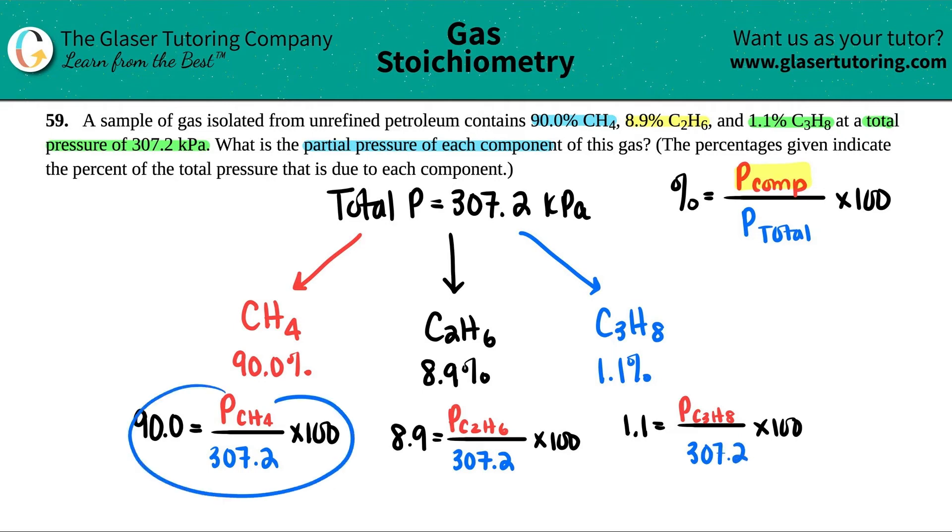Now I'm going to do this all in one shot in the calculator, but all you're doing is basically solving for the numerator, the partial pressure, aka the pressure of each individual compound. So let's see. Pressure of CH4, the methane. Let's see. We get, I'm going to do 90 divided by 100, and then times by 307.2.